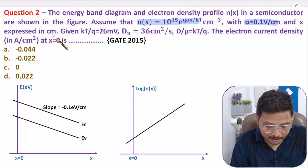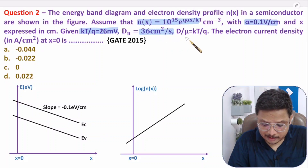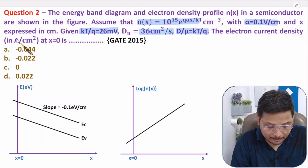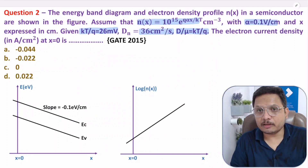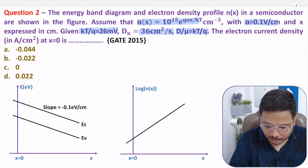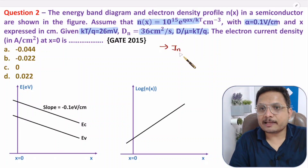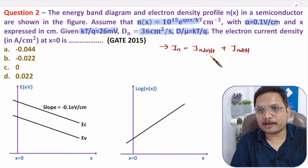Given values are: kT/q = 26 mV, diffusion coefficient D = 36 cm²/s, and the Einstein relation D/μ = kT/q (thermal voltage). We need to find the electron current density in A/cm² at x = 0. The electron current density Jn is a combination of drift current density plus diffusion current density.